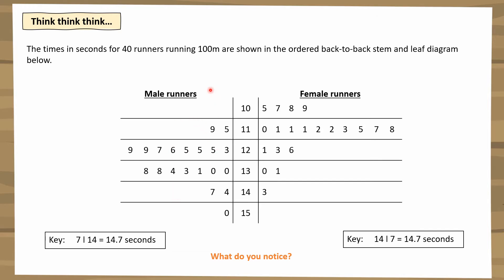Each side must be labeled — male runners on the left and female runners on the right. At the bottom, we need two separate keys. The right-hand key works as normal: 14 | 7 means 14.7 seconds. But we need a separate key for the left-hand side because it reads in reverse: 7 | 14 also means 14.7 seconds.